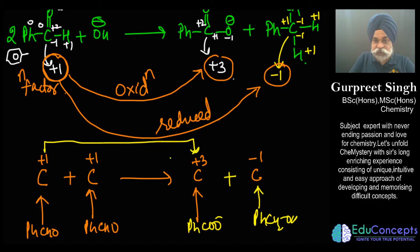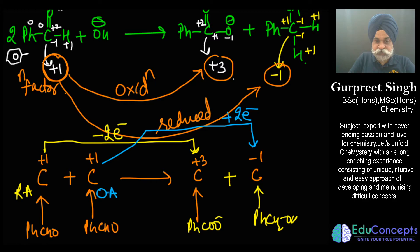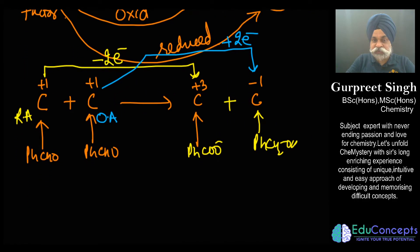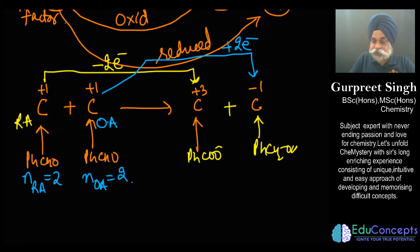Going from +1 to +3 means this carbon is acting as a reducing agent, losing two electrons. The other carbon goes from +1 to -1, gaining two electrons, acting as an oxidizing agent. So how many electrons are being exchanged between these two carbons? As a reducing agent, the n-factor of benzaldehyde is 2; as an oxidizing agent, it is also 2.